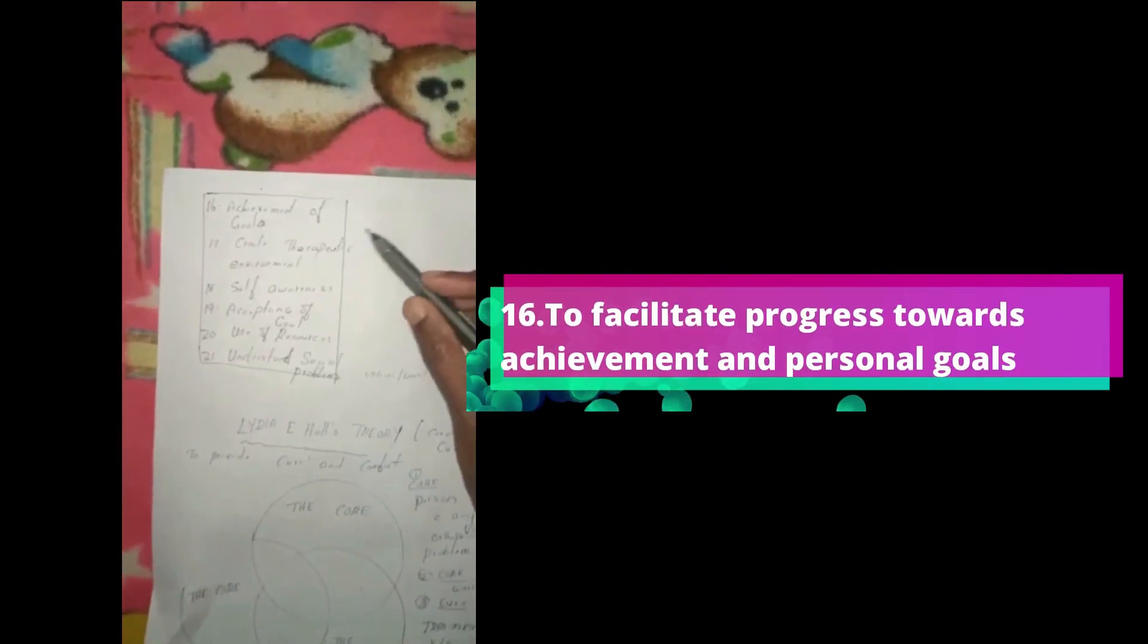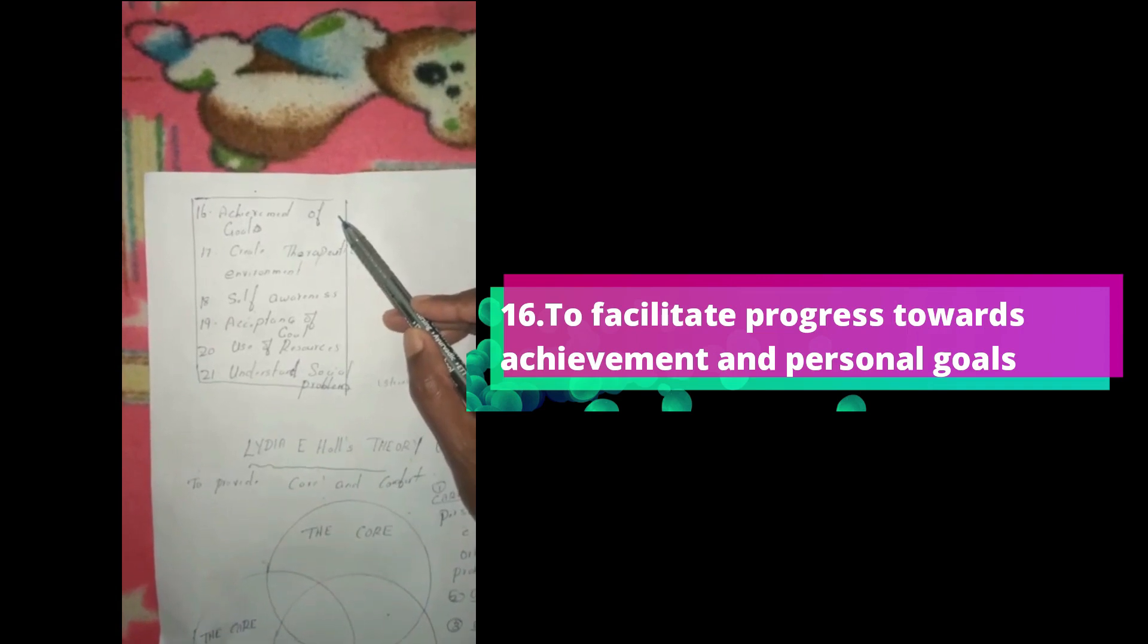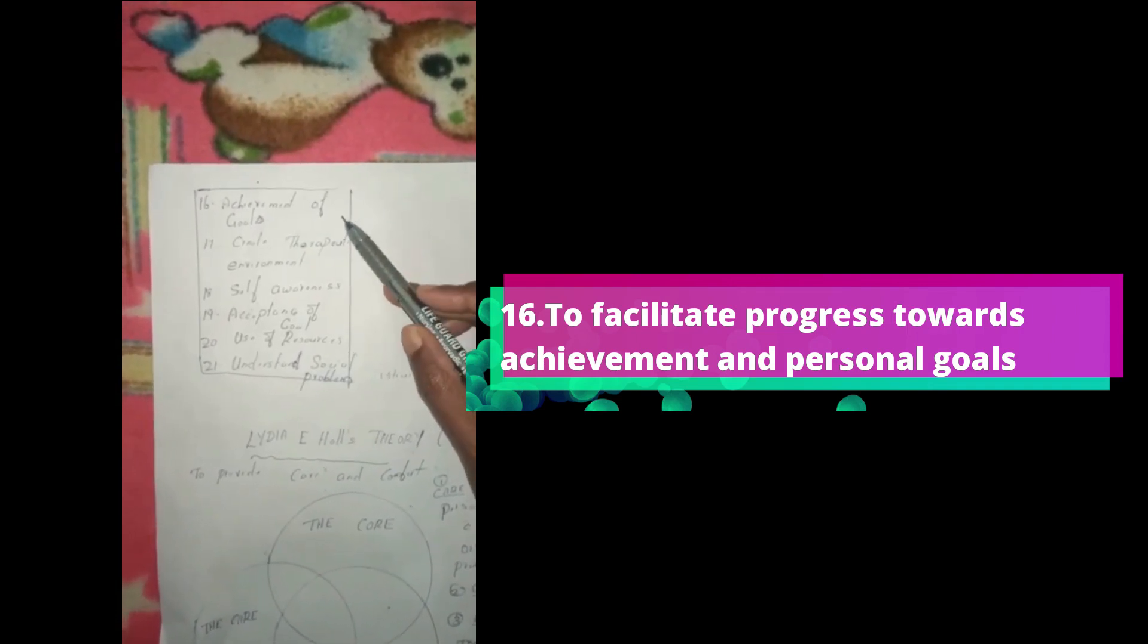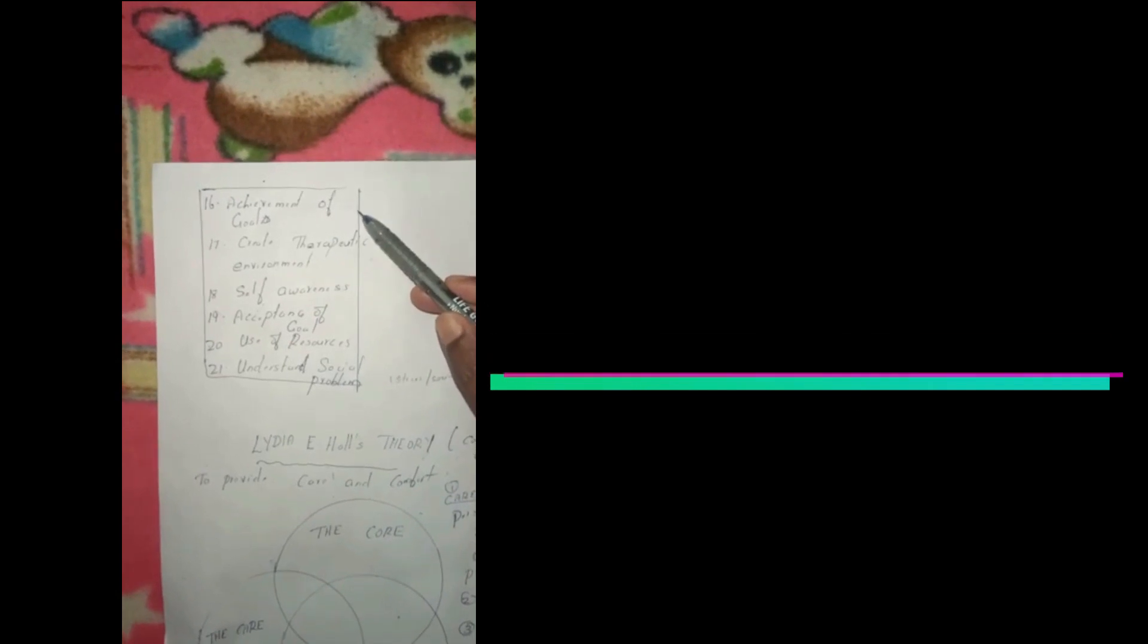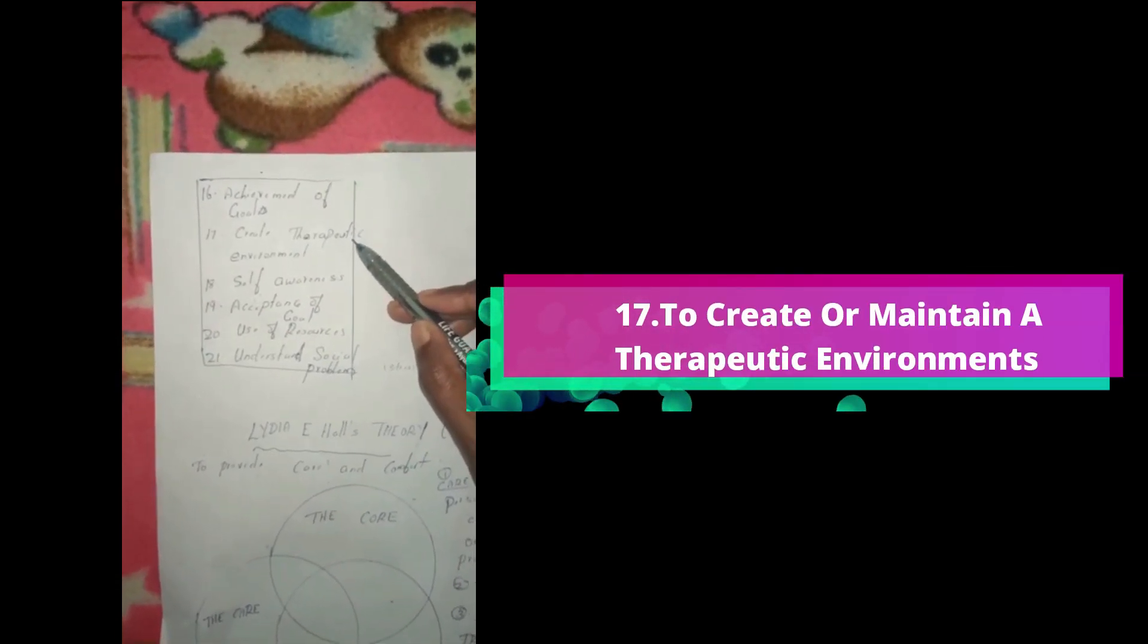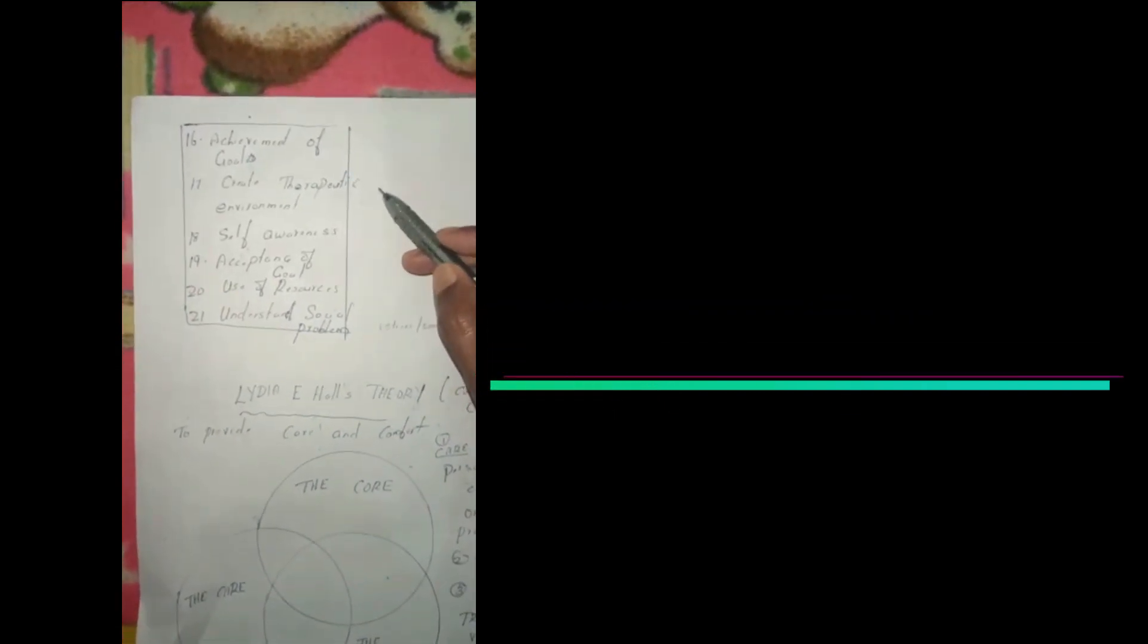The next one is achievement of goals. Every person will be having his or her goal. He will be trying his level best to achieve the goal. In the same way the nurse has to help the client to achieve his or her goals. Then creating a therapeutic environment, that is best nurse-patient relationship.